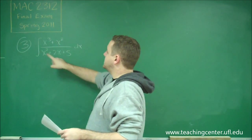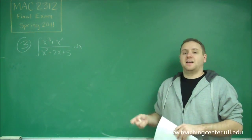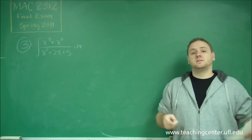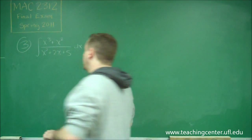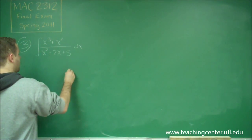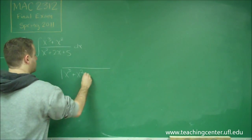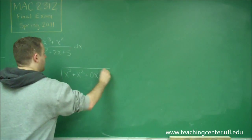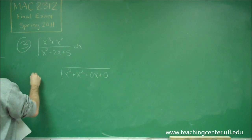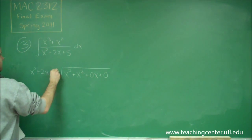What you want to notice first is that the numerator has a higher degree than the denominator, and in that case you always want to start off by doing polynomial long division to simplify it as much as possible. So we're going to divide x cubed plus x squared — remember to fill in the remaining powers of x with zeros — by x squared plus 2x plus 5.